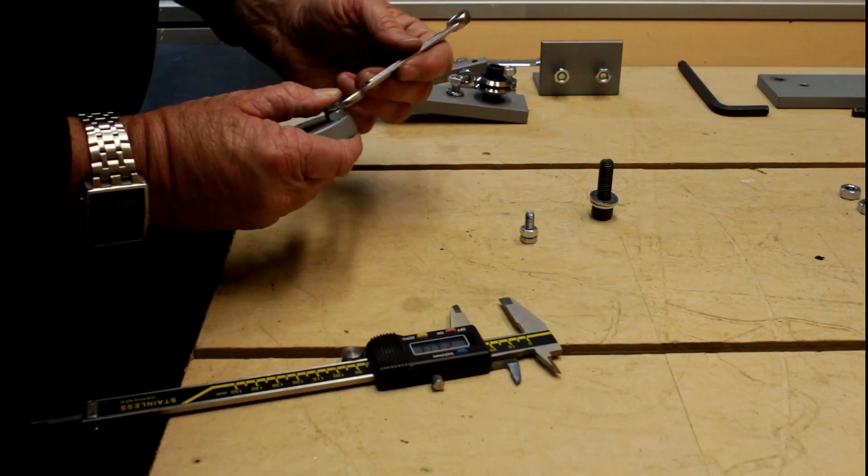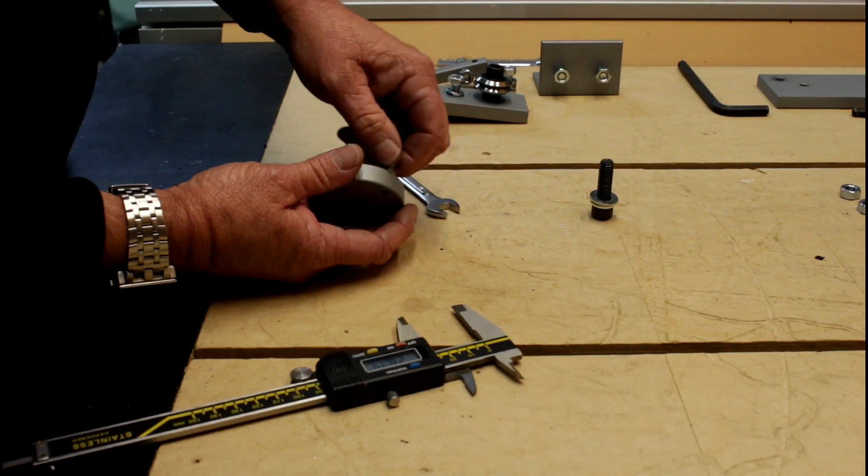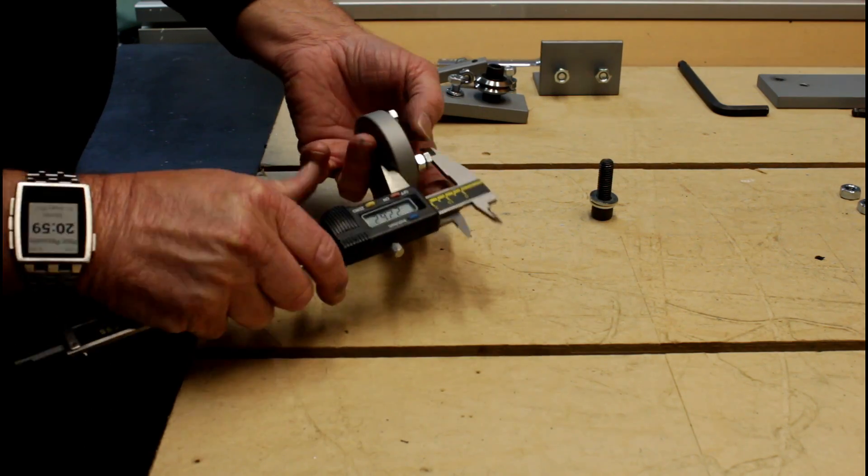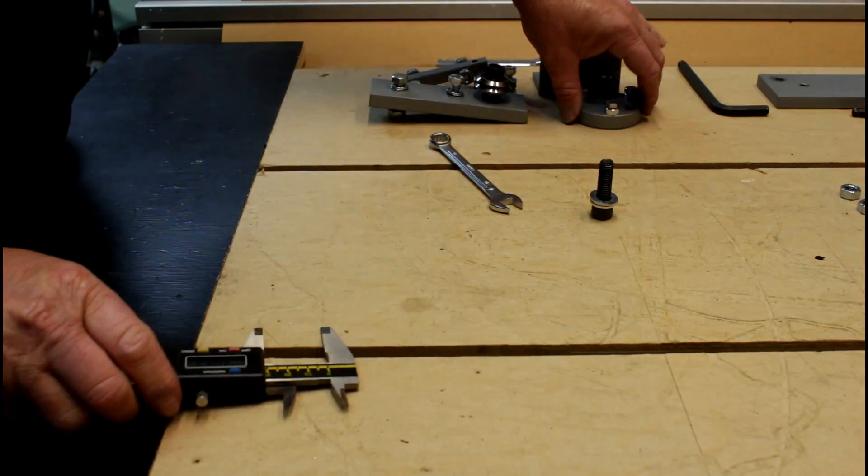The second function of the adjustment cam is it allows you to adjust the attack angle of the rack and pinion drive with respect to the carriage. Ideally, I want mine at 45 degrees.